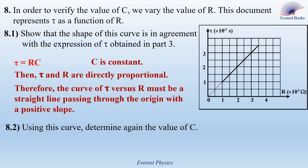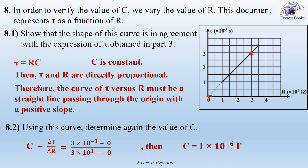Part 8-2: using this curve, determine again the value of C. Since T1 equals R times C and C is constant, C is the slope of the curve, given as delta T over delta R. Taking two points from the curve: the first point with abscissa 3 times 10³ ohms and ordinate 3 times 10⁻³ seconds, and the second point at the origin (0, 0). So C equals (3 times 10⁻³ minus 0) divided by (3 times 10³ minus 0), giving C equals 1 times 10⁻⁶ farads.